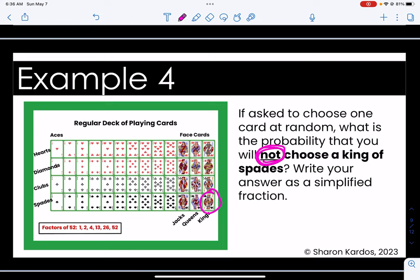Well I only have one king of spades but I have to be careful because this problem says not choose a king of spades. So that means I have 51 other cards that are not a king of spades. So I actually have a 51 out of 52 which would be very likely, almost certain but not quite, that I would not choose a king of spades. And I cannot simplify that, there's nothing that I can divide both of those by except one. So this is my final answer.